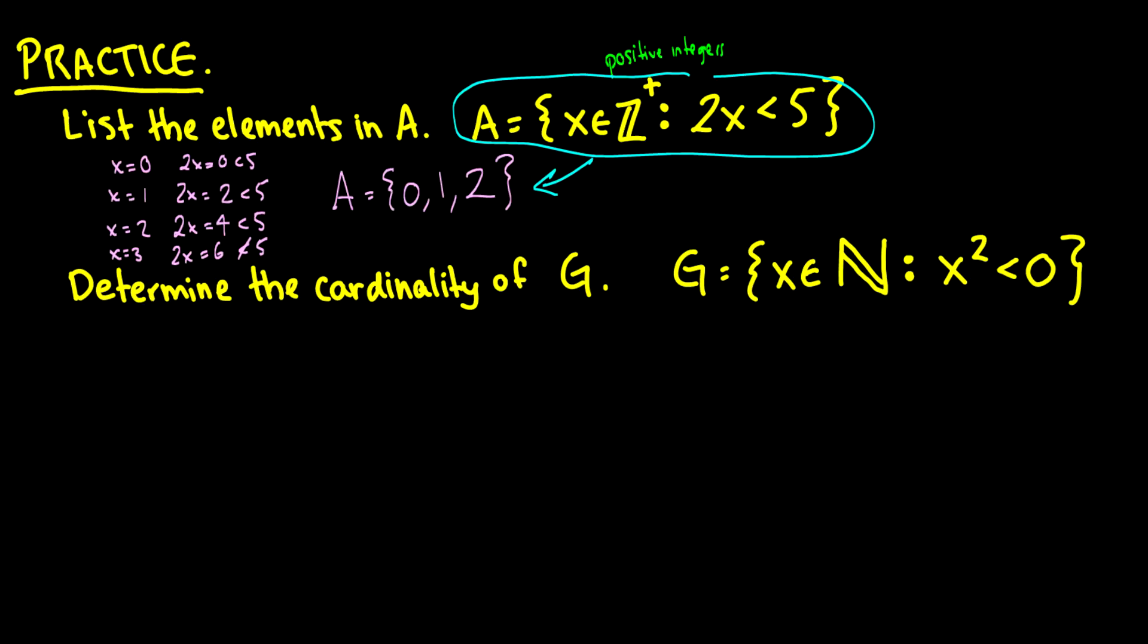So here's another question. Let's determine the cardinality of this set, where x is in the natural numbers, such that x squared is less than 0. So we want to build the set first, of all numbers that are natural, where if you square that number it's going to be less than 0.